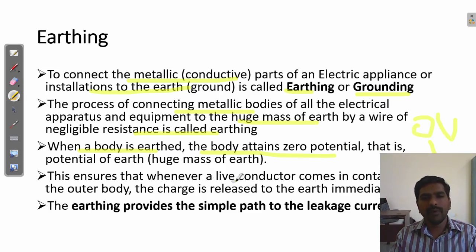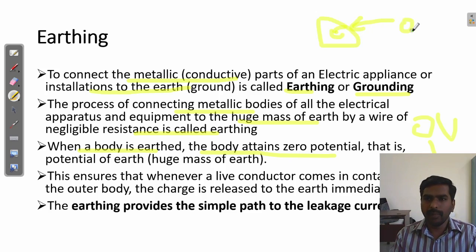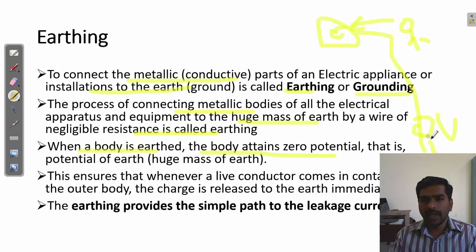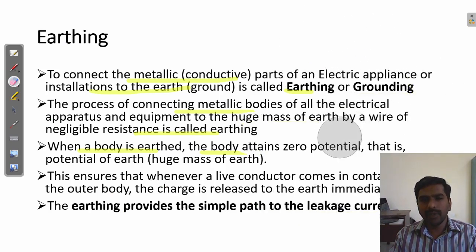This ensures that whenever the live conductor comes in contact with the outer body, the charge is released to the Earth immediately. Whenever, by mistake, a person comes in contact with that equipment and there is an electrical shock risk, the current will not flow through the body — the current will flow through the Earth at zero potential. Because the body of the equipment is connected to Earth through a conducting wire of zero resistance, maximum current flows through the Earth. The Earth provides the simplest path for leakage current.